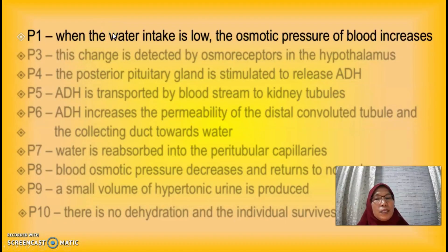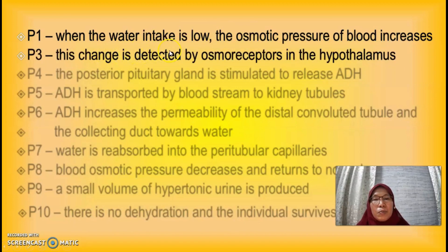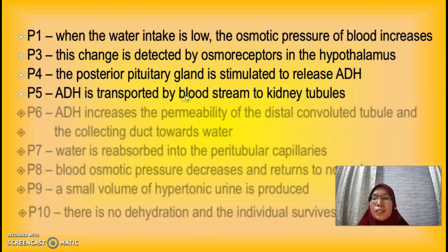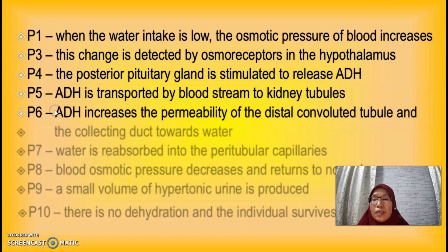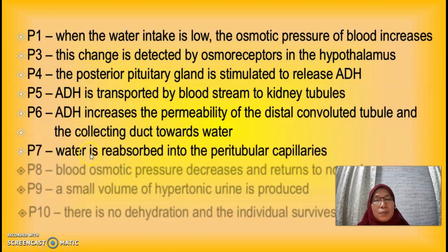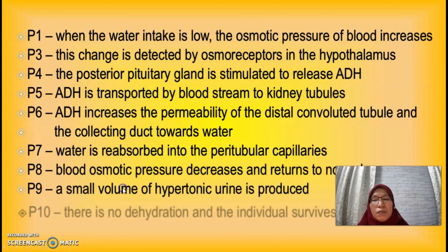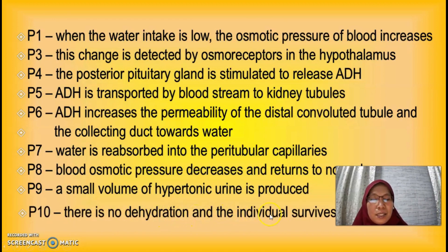The suggested answer for the osmoregulation question is: when water intake is low, the osmotic pressure of blood increases. This change is detected by osmoreceptors in the hypothalamus. The posterior pituitary gland releases ADH. ADH increases the permeability of the distal convoluted tubule and collecting duct towards water. Water is reabsorbed into the peritubular capillaries. Blood osmotic pressure decreases and returns to normal. A small volume of hypertonic urine is produced, there is no dehydration, and the individual survives. This gives 9 points for an 8-mark question.